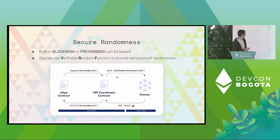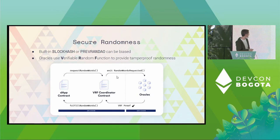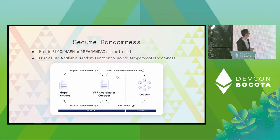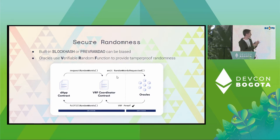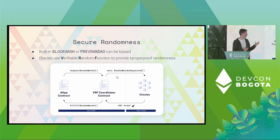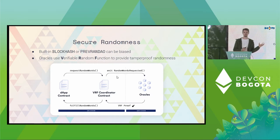We start with our DApp contract that, if it wants some randomness, can request from another contract on chain that's part of this VRF service some random words. The contract will emit an event telling the oracles that randomness has been requested.